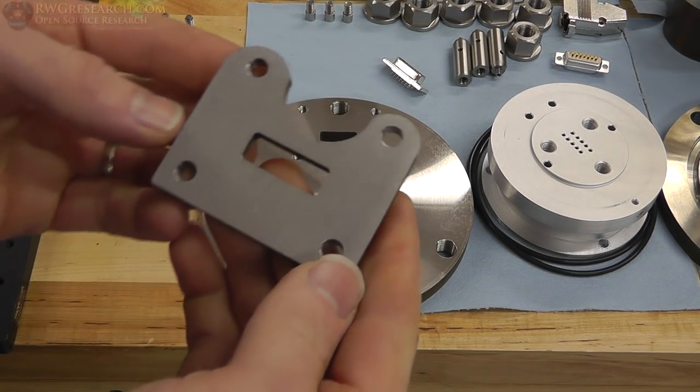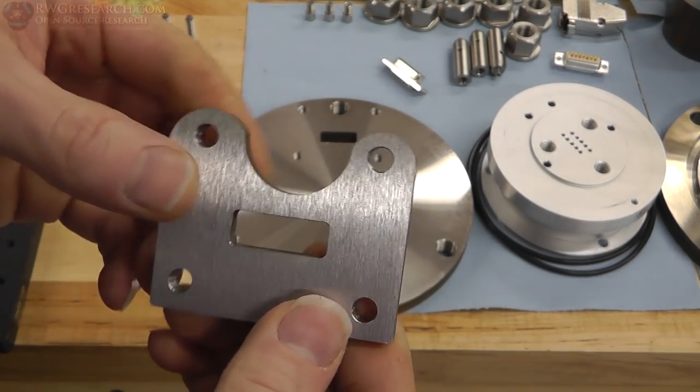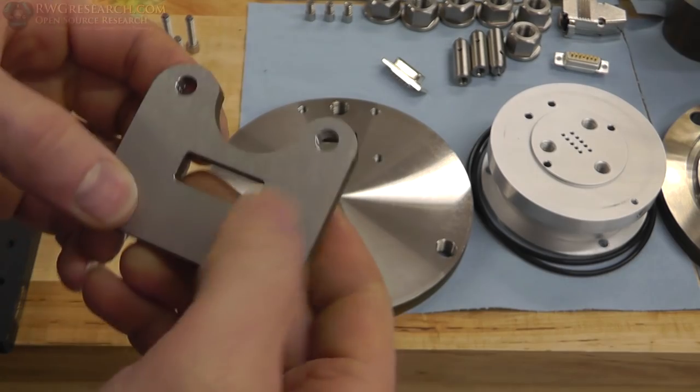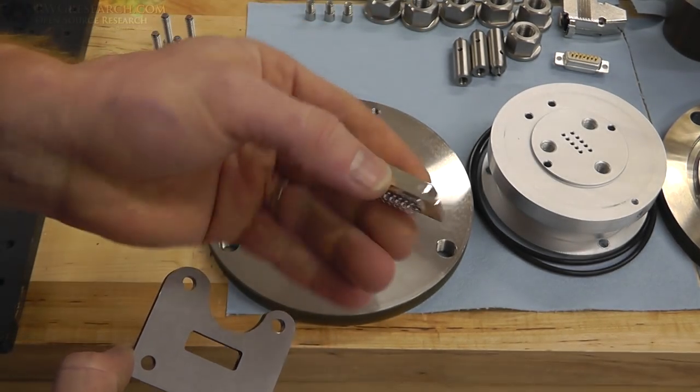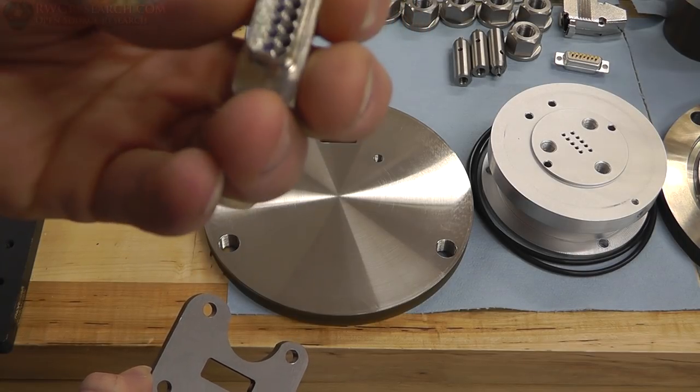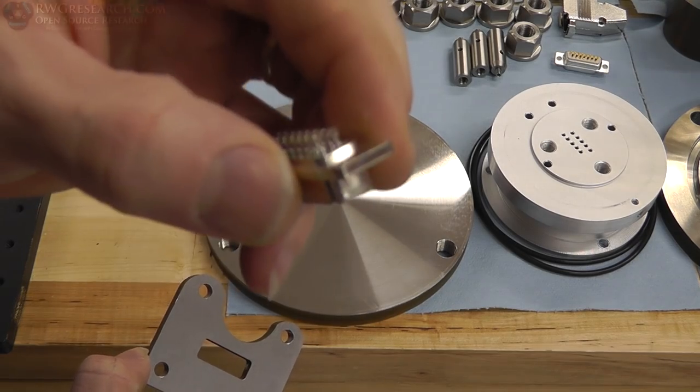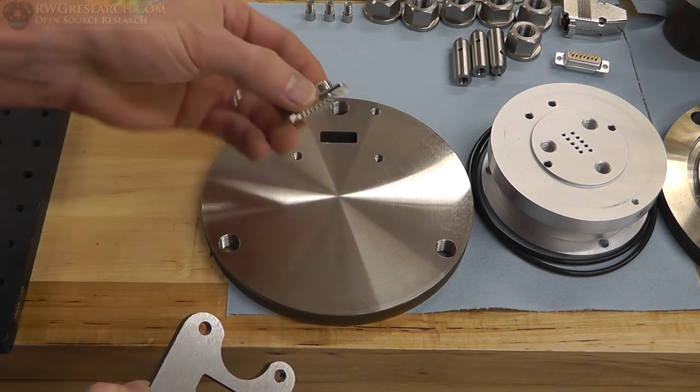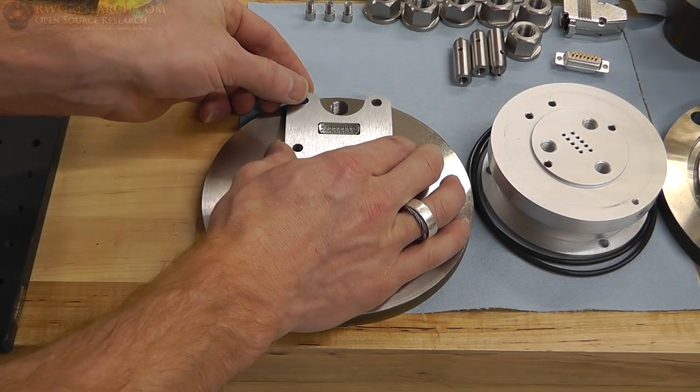Alright, well we've made these parts. They look really nice. EDM'd this guy, and also this slot right here. And then drilled the four holes, as you just saw. The harmonically sealed glass insulated connector has this little lip on the bottom, which fits right in there. And this plate fits right on top.